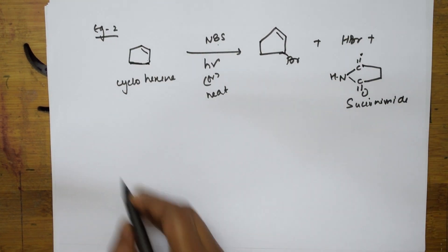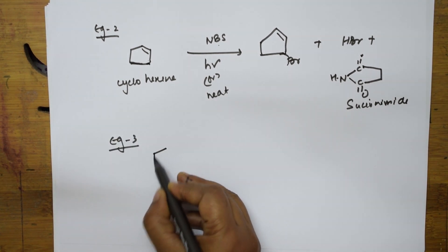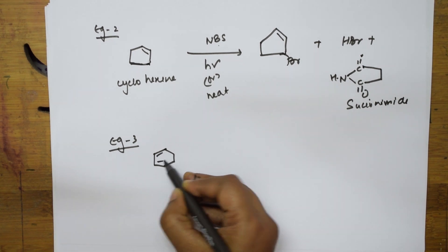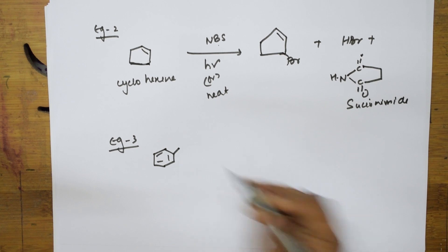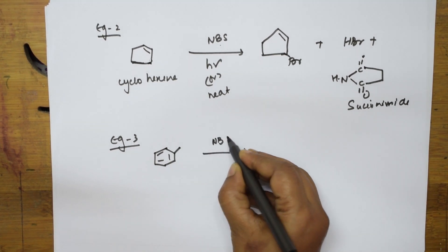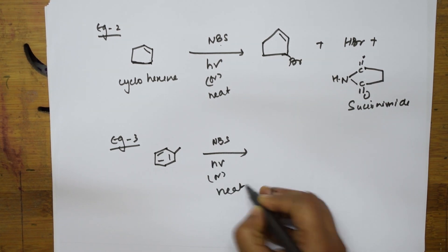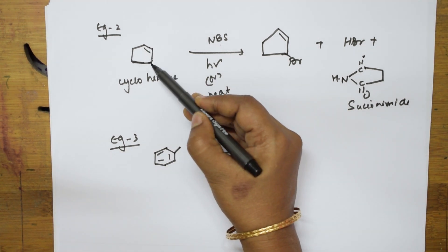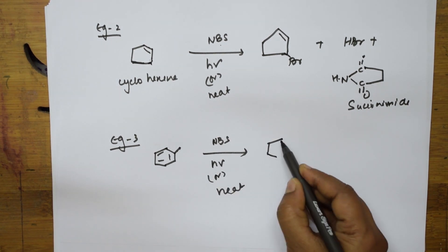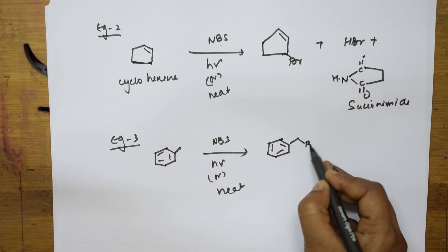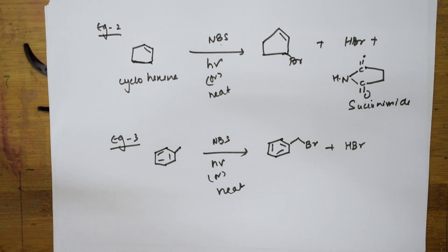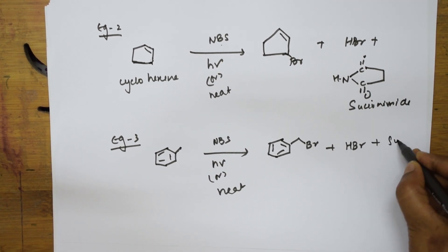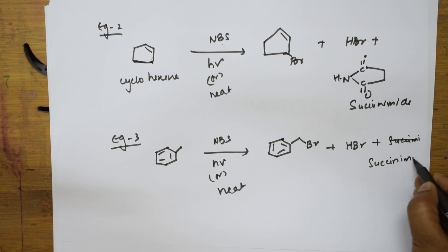Let me take one more example — example 3. Suppose my teacher gives me a substituted alkene with a substituent on the ring. With NBS and hν or heat, the bromine adds one bond away from the double bond — leave this double bond, leave one bond, and then add bromine there. The product is the allylic bromide, HBr is released, and succinimide comes out.